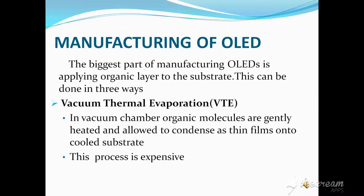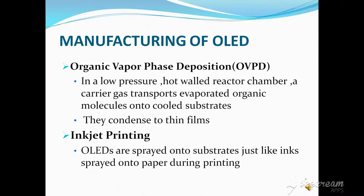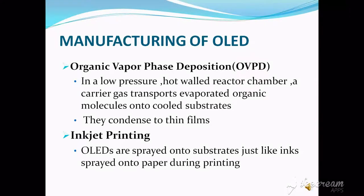In manufacturing OLEDs, the biggest part is applying the organic layer to the substrate, which can be done in three ways. First is vacuum thermal evaporation: in a vacuum chamber, organic molecules are heated and allowed to condense as thin films onto a cooled substrate — this process is expensive. Second is organic vapor phase deposition: in a low-pressure hot-wall reactor chamber, a carrier gas transports evaporated organic molecules onto a cooled substrate where they condense to thin films. Third is inkjet printing, where OLEDs are sprayed onto the substrate just like ink sprayed onto paper during printing.